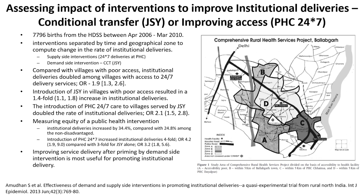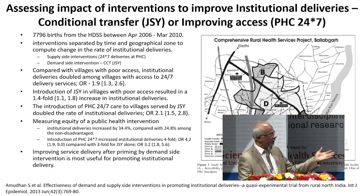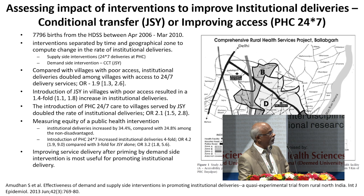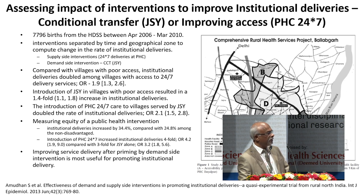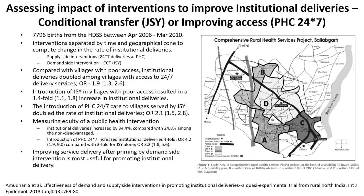Another example involves institutional deliveries. We introduced 24x7 deliveries at the PHC in Chhansadhyalpur and at Balapgarh. At the same time, the government introduced Janani Suraksha Yojana — a demand-side intervention where people were paid money to use institutional deliveries — whereas strengthening the health system is a supply-side intervention. Using data across these time periods, we could identify whether demand-side or supply-side interventions work. It clearly showed that both demand-side and supply-side interventions each increased institutional deliveries by two times, but when combined they increase it by three times — clearly showing a synergy.